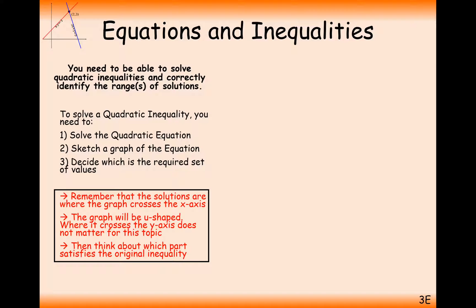First, we need to solve the quadratic equation — take your quadratic inequality, turn that inequality into an equals sign, and solve. Second, sketch a graph of the equation; the roots of the quadratic equation are the intersection points on the graph. Third, decide which side of the graph we want: if we want the part greater than 0, we want it on top; if less than 0, it's on the bottom.